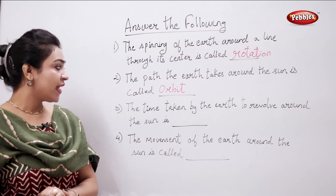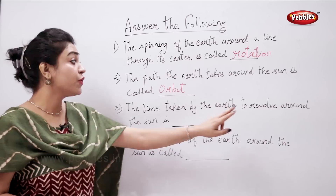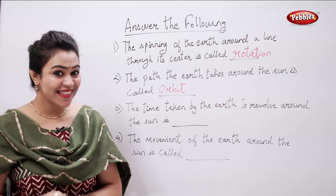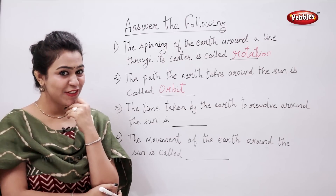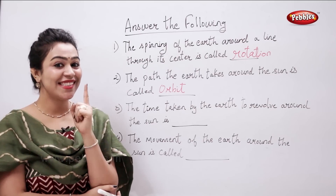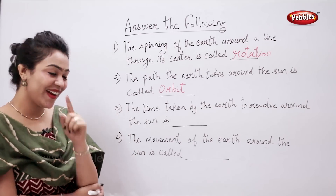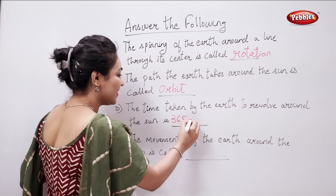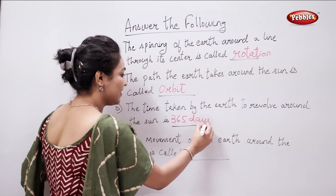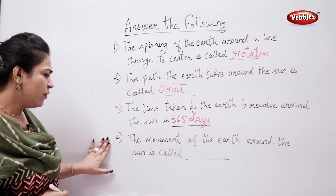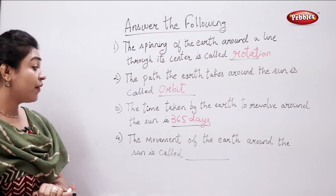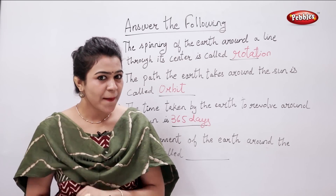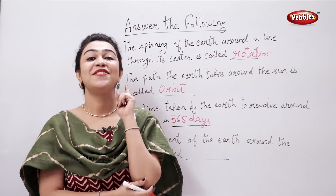The time taken by the earth to revolve around the Sun is? 365 days. Correct. The movement of the earth around the Sun is called? Revolution.